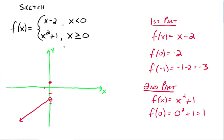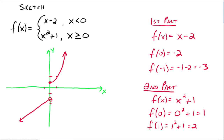We're allowed to use the second part for any number greater than 0. So f of 1 would be 1 squared plus 1, which is 2 — the ordered pair 1, 2. We know that f of x equals x squared plus 1 is a parabola, so it's really just going to be the second half of our parabola going up. f of 2 would be 5, and so forth. We're just trying to get a general idea of what the sketch looks like.